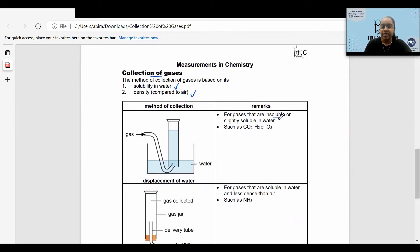For gases that are insoluble or slightly soluble in water, the method that we use is displacement of water. Some examples include carbon dioxide and oxygen.